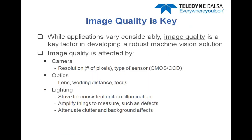In every machine vision application, image quality is key. The more work you put in up front to provide the best image possible, the better your results will be. What's involved with obtaining this quality image? You need a quality camera, which might involve a higher resolution imager — it depends on the smallest defect size and the field of view. You also need good optics. There are different quality lenses, and optics also involves focus, working distance, and compensating for part position variances, so optics are key as well.